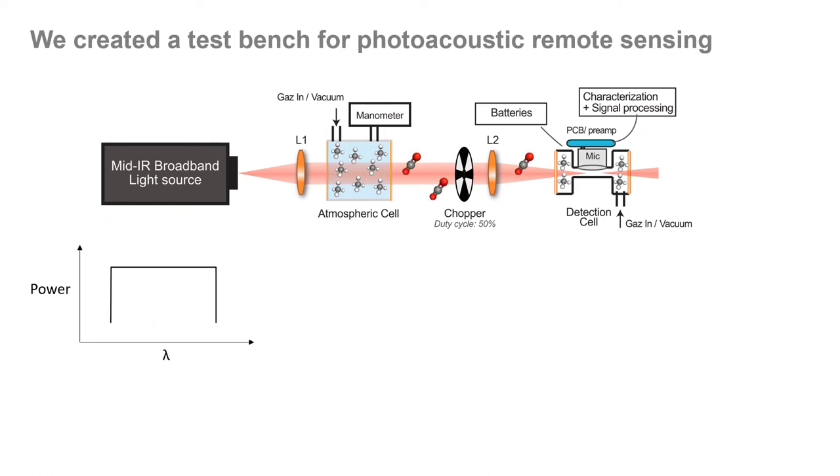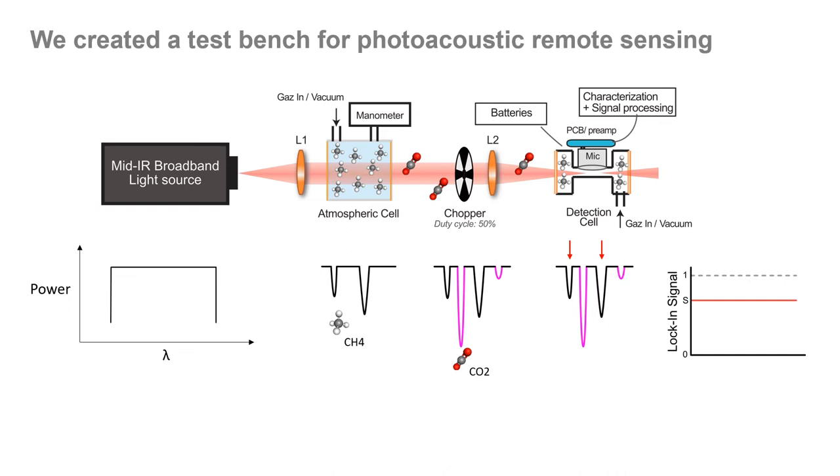The basic principle of our technique works as follows. At first, the broadband light spectrum is represented by a rectangle. When the light passes through the atmospheric cell filled with a set concentration of the target gas, which in our case was methane, some parts of the light are absorbed. Then, other gases present in the lab air, such as CO2, will also affect the signal. Finally, when the light arrives in the detection cell which is filled with the target gas, only the remaining power at the wavelengths corresponding with the methane absorption lines will contribute to the photoacoustic effect. Since there is no other gas in the detection cell, all the other wavelengths corresponding to other gases are ignored.